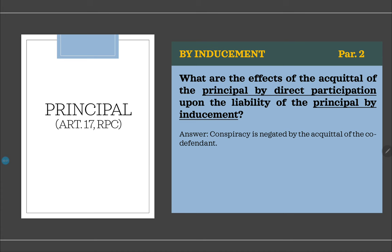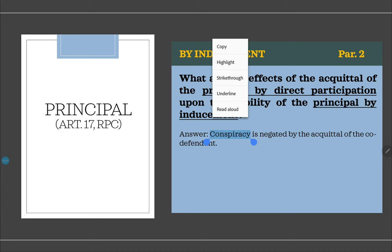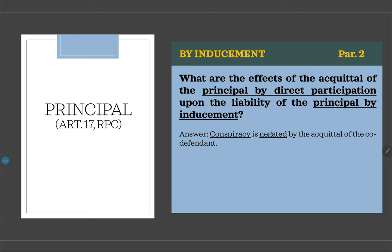What are the effects of the acquittal of the principal by direct participation upon the liability of the principal by inducement? Conspiracy is negated by acquittal — meaning the conspiracy is considered to have not existed. If the direct participator is acquitted, the conspiracy is negated; since no crime was committed, the principal by inducement may also be acquitted.